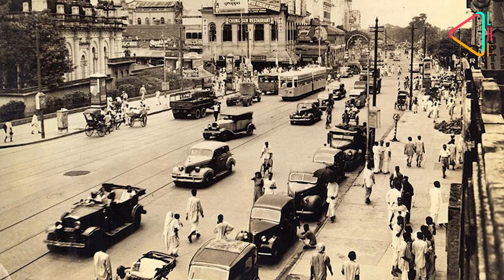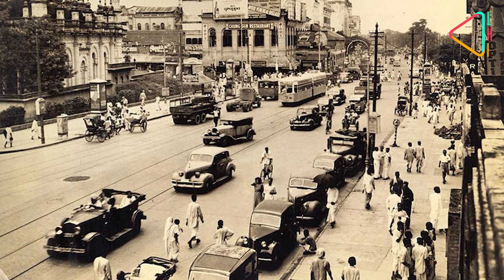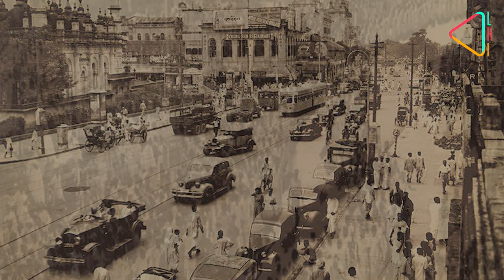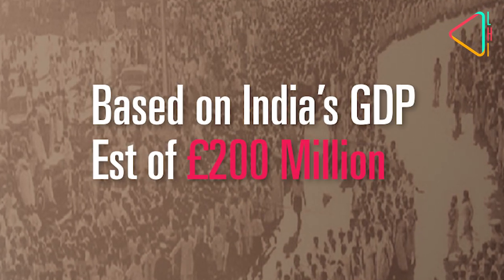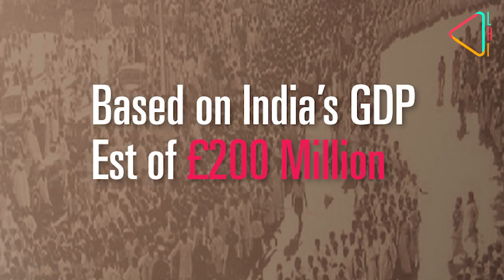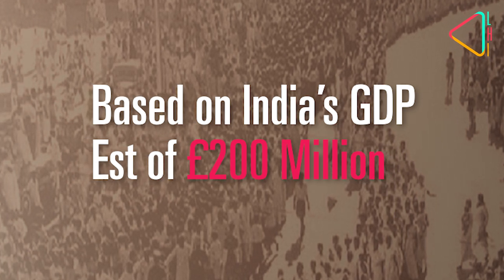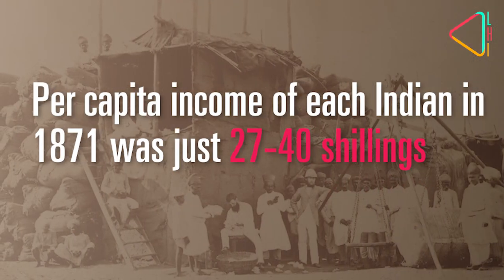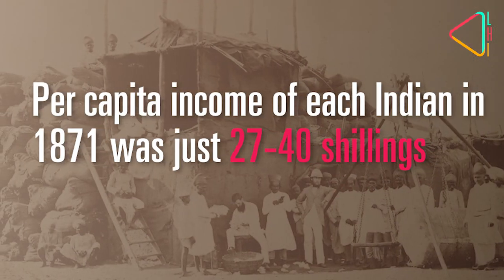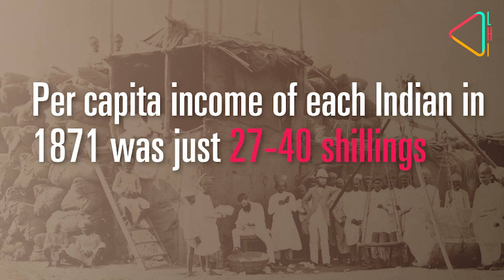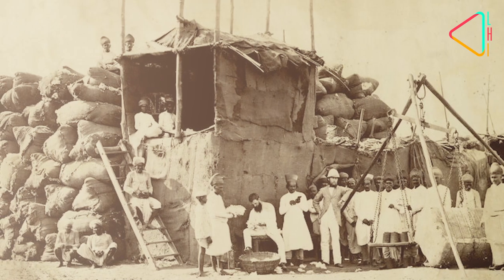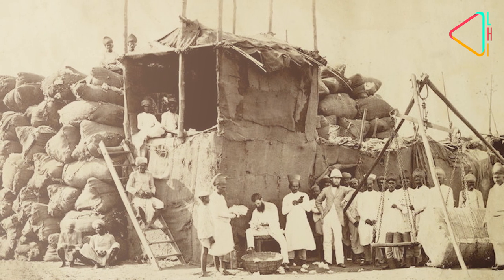Naoroji was also perhaps the first person to try and calculate the per capita income of each Indian. In 1871, based on his estimates that India's GDP was around £200 million, he surmised that the average per capita income of each Indian at the time was just about 27, perhaps 40 shillings — around 25 times lower than the income of an average Britisher.